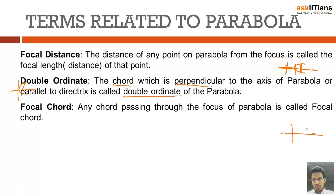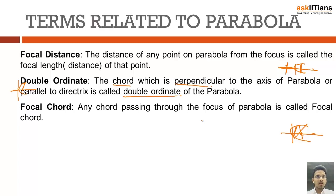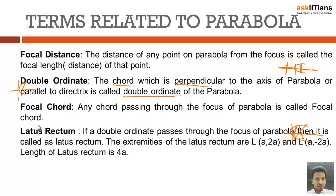The next term is focal chord. Any chord passing through the focus is called a focal chord. You can have chords that do not pass through the focus, but a focal chord specifically passes through the focus. The focal chord has some special properties that we will see in coming parts. The only thing to remember is that it must pass through the focus.